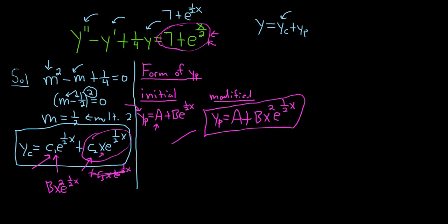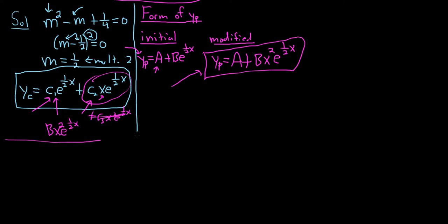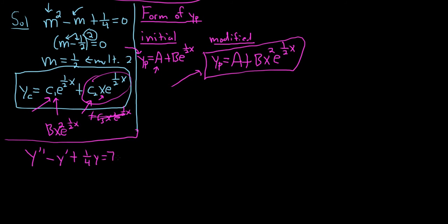The next step is to take the derivative of yp twice and plug it into the DE. This is where things get complicated. Let me rewrite the DE: y double prime minus y prime plus ¼y equals 7 plus e to the ½x. We're going to plug in yp, so let's carefully take the derivatives.